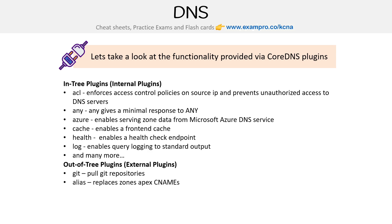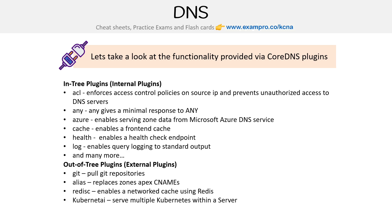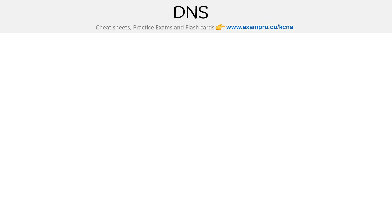For out-of-tree plugins, there's alias, Redis cache — so enabled cache using Redis — and KuberNot to serve multiple Kubernetes clusters within a server, and many more. Hopefully that gives you an idea of how robust and modular CoreDNS is.